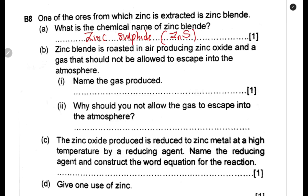For question B, zinc blende is roasted in air producing zinc oxide and a gas that should not be allowed to escape into the atmosphere. Name the gas produced. So in this case, the gas produced is sulfur dioxide. That is the gas produced.